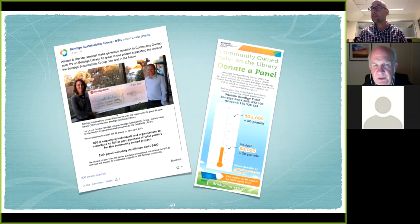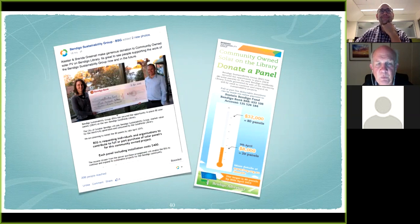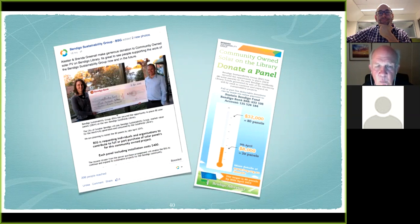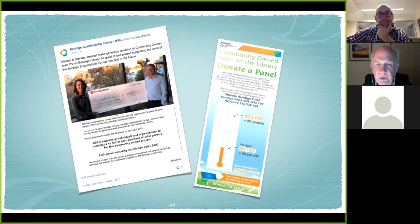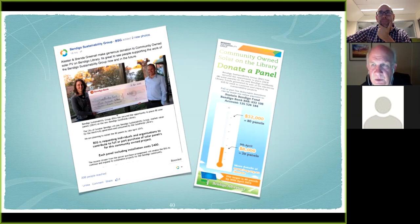One of the biggest things was Facebook. Every time somebody donated, they rushed out with a camera and took a photo, and the donors distributed that on their own Facebook pages. BSG's Facebook engagement jumped to 2,000 to 3,000 people because the people in the photos distributed them amongst their networks. It just worked really well.